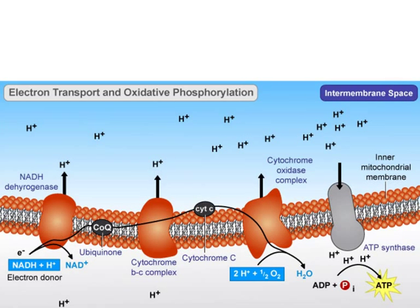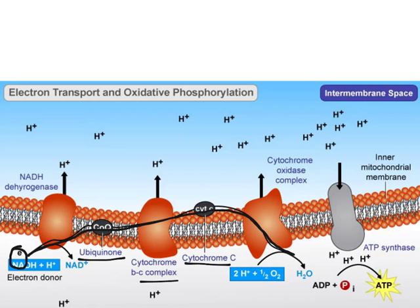What happens is you start off with an electron, and the electron gets transported across. Each molecule that it gets transported to is more electronegative than the previous one, which means it has more of an attraction to the electron — so it pulls it more. That's how the electron moves.